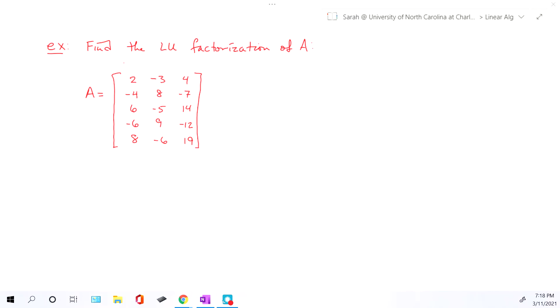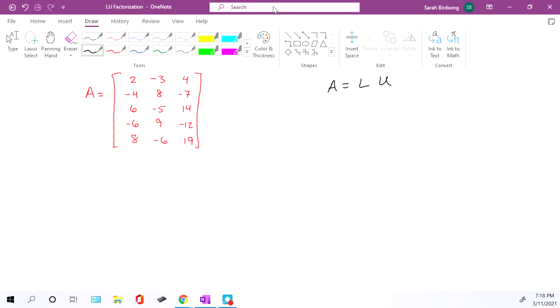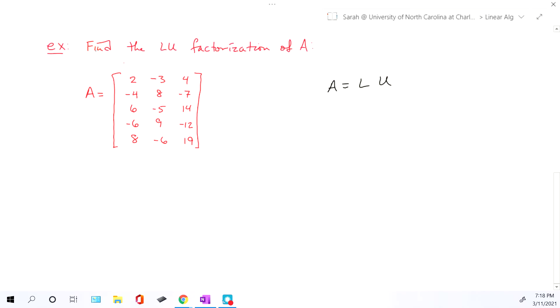Anytime you do LU factorization, the first thing I would recommend doing, especially if you don't have a square matrix, is to the side go ahead and write out that formula for what the LU factorization stands for. In other words, A equals L times U. Now do you need to write that out? You could only think that in your head too, but why I recommend it is this is going to help you with the size of your matrix L and U.